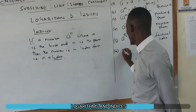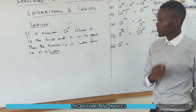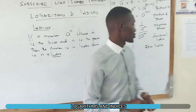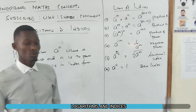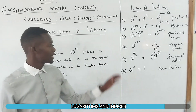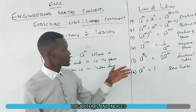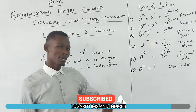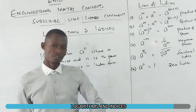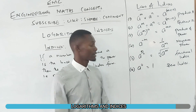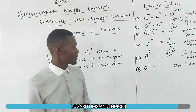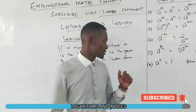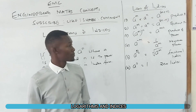Lastly, any number raised to power 0 is always equal to 1. This is called the zero index. So in our operation of indices, we have: the product rule — multiply numbers with the same base, you add the powers; the quotient rule — divide, you subtract the powers; power of powers — multiply the two powers together; negative power — move to the denominator and change sign; fractional index — numerator is the power, denominator is the root; and any number raised to power 0 equals 1.